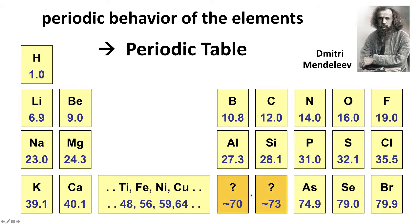He predicted that there were some elements that hadn't yet been found that would have behavior similar to the elements in the column that were already known, and predicted rough masses. Lo and behold, shortly after Mendeleev's periodic table these elements were in fact discovered with properties as predicted.